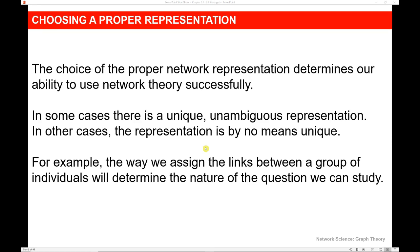In some cases there's a unique, unambiguous representation, and for most networks in this course that's what we'll have. But in other cases, the representation is by no means unique. For example, the way we assign the links between a group of individuals will determine the nature of the question we can study. I could create a network of all of the faculty in the CIDM department, and I would have to decide what kind of link I would want between each faculty member — whether the link represents that they've worked together, taught the same course, or researched together. The choice of the link would determine what kind of analysis we could do.